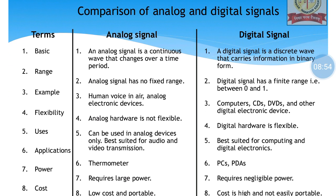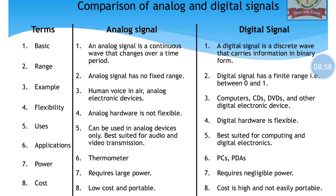Regarding comparison of analog and digital signals — analog is a continuous waveform and a digital signal is a square-type wave. An analog signal is a continuous wave that changes over a period of time, but a digital signal is a discrete wave that carries information in binary form — if it is going up, it is one; if it is coming down, it is zero. Analog signal has no fixed range. Digital signals have a range of zero and one. Analog hardware is not flexible; digital hardware is flexible.